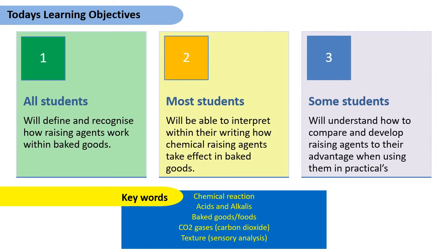Today's three learning objectives: all students will define and recognize how raising agents work within baked goods such as scones, breads, and cakes. Most students will interpret within their writing how chemical raising agents take effect in baked goods, writing in full sentences. Some students will understand how to compare and develop their raising agent knowledge to their advantage when using them in practicals. Please use the keywords: chemical reaction, acids, alkali, baked goods, CO2, and texture for sensory analysis.